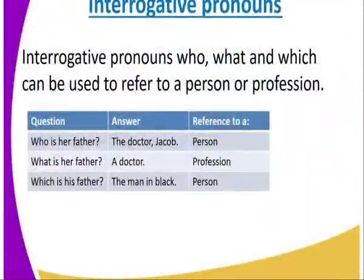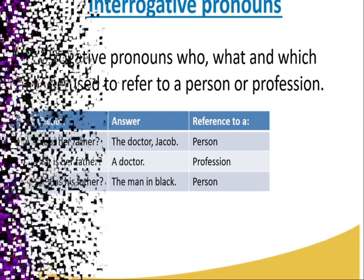The interrogative pronouns who, what, and which can also be used to refer to a person or profession. For example: Who is his father? The answer is Dr. Jacob — reference is to a person. What is his father? A doctor — reference is made to a profession. Which is his father? The man in black — reference is made to a person.